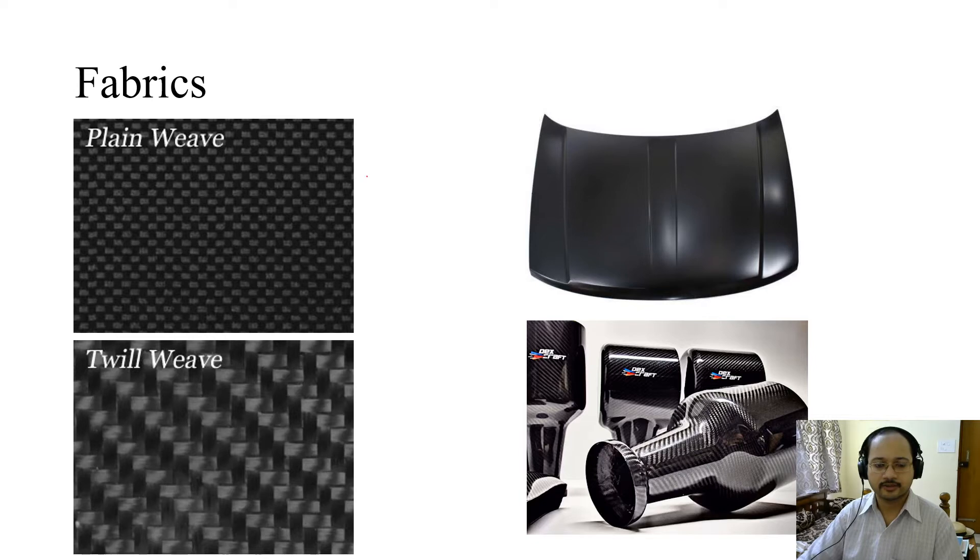Coming to fabrics, there are two types: plain weave structure as well as twill weave structure. Then there are other varieties. Here we are particularly looking at carbon weave, where you can see these are plain alternating strands, whereas in case of twill weave, there is a diagonal trend. This is an example of a sheet moulded compound and these are other products made from carbon fibres.